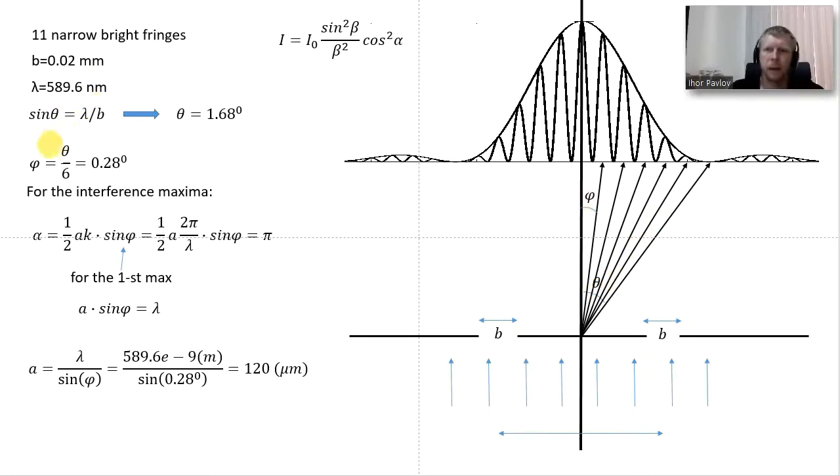That phi equals theta divided by 6 and equals 0.28 degrees. This corresponds to the interference maxima, since we have cosine squared here. The maximum appears each time when alpha equals zero for the central maximum, when alpha equals pi then cosine equals minus one but since we have square it will be one, then two pi and so on.